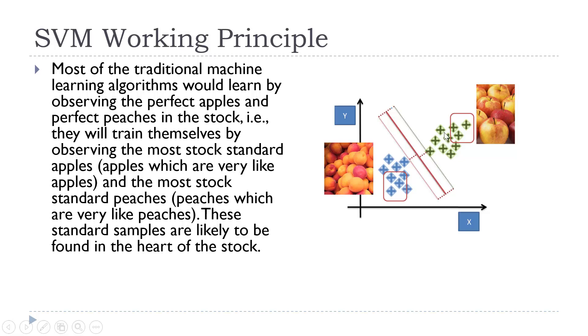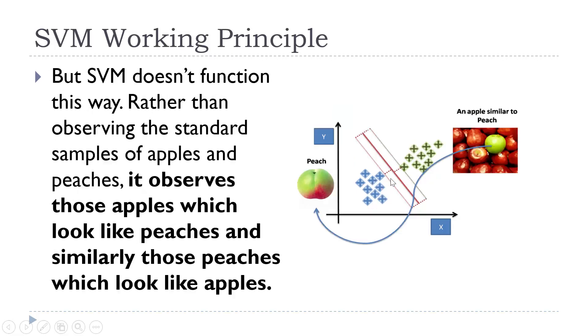But SVM does not function in this way. Rather than observing the standard samples of apples and peaches, it tries to identify or observe those apples which look like peaches or those peaches which look like apples.